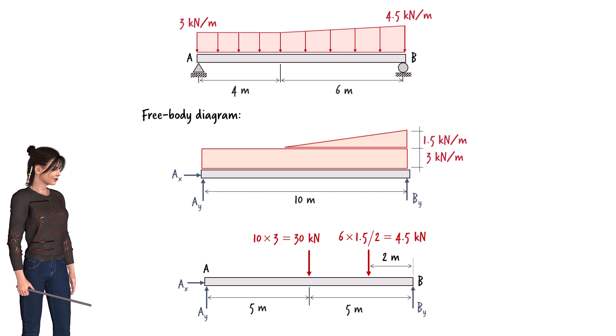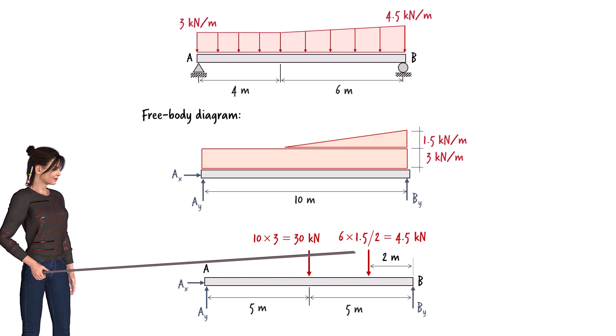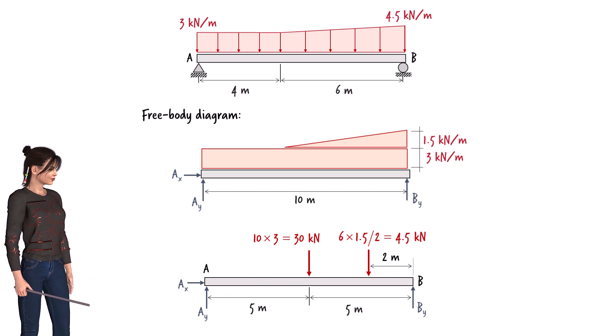The area of the triangle is 4.5, so we can replace it with a point load having a magnitude of 4.5 kN. I have placed the point load 2 meters to the left of B, which is the location of the center of the triangle.